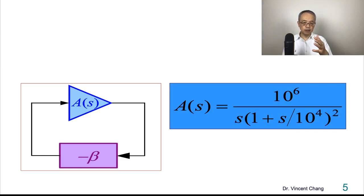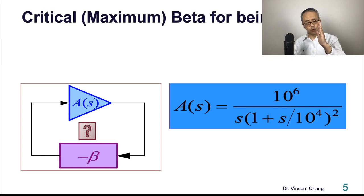Assuming the open loop amplifier has three poles, and two are the same, 10K, 10 to the fourth power, three poles. And the DC gain is 10 to the sixth power, which is 120 decibels. So now I want you to find out to maintain, to make sure this feedback system is stable, what is the maximum allowable beta?